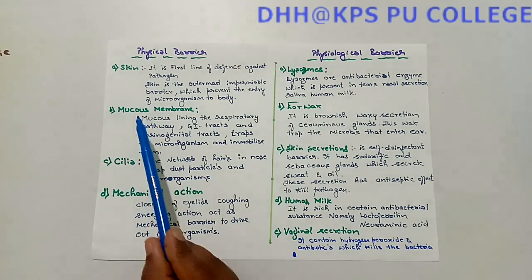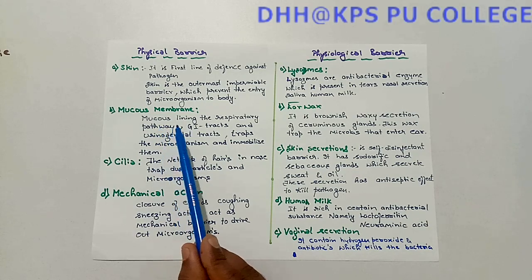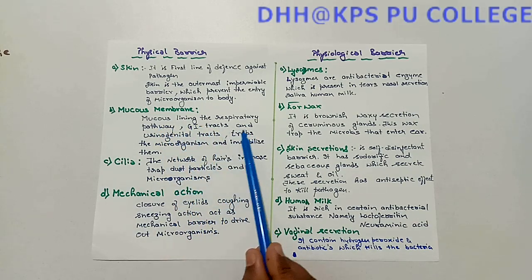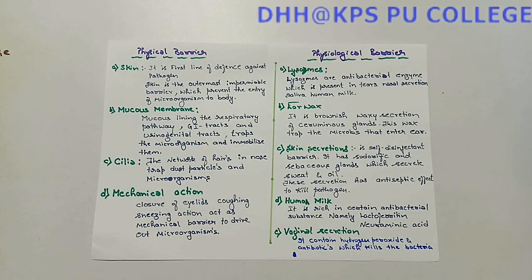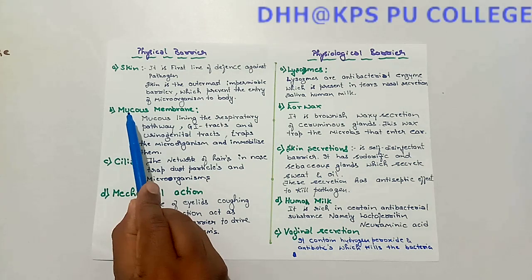The second physical barrier is the mucous membrane. Mucous membrane is present in the respiratory pathway, GI tract, and urinogenital tract. When a pathogen enters these tracts, the mucus traps and immobilizes or kills them.